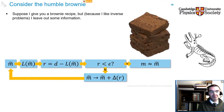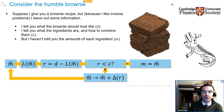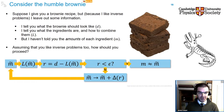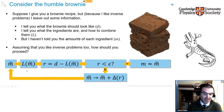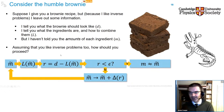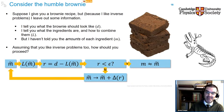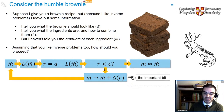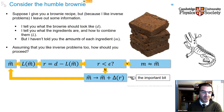A good analogy is a brownie recipe. Suppose I give you a recipe but leave out some information: I tell you what the brownie should look like (that's D) and I tell you the ingredients and how to combine them (that's L), but I haven't told you the amounts of each ingredient. A good way to proceed is: make an initial guess for the ingredients, follow the recipe — the result will probably be revolting — compare that to the image of the brownie, make some adjustments based on common sense, and try again. Repeat that process and eventually you reach the perfect brownie. The important bit is how we update our guess from one iteration to the next.